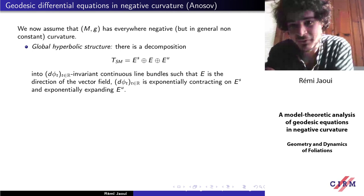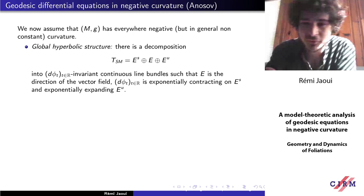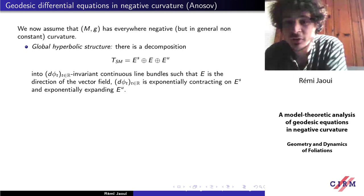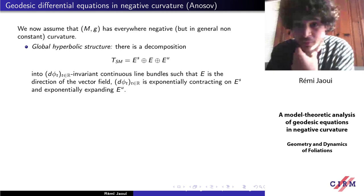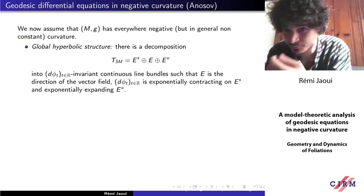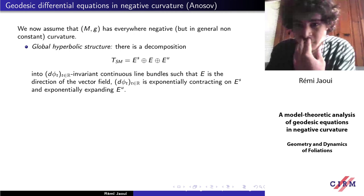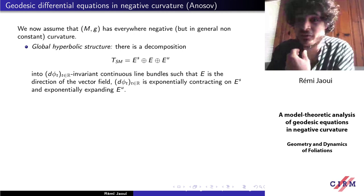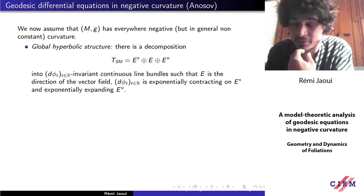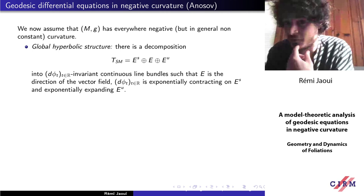Even allowing the curvature to vary, you get a global hyperbolic structure: a decomposition of the tangent space of the sphere bundle — which has dimension 3 — into three continuous line bundles E, E_s, and E_u. All three are invariant under the differential of the flow. Since M is compact, the flow is complete. The differential of the flow is exponentially contracting on one of them and exponentially expanding on another. E itself is the direction of the vector field, so the vector field has no singularities in the real locus.